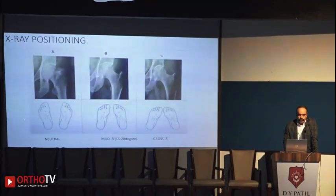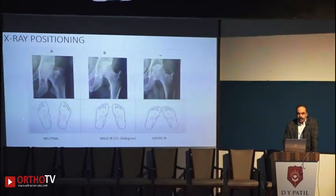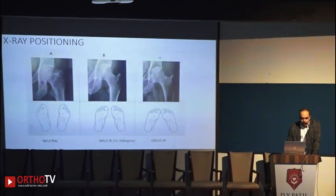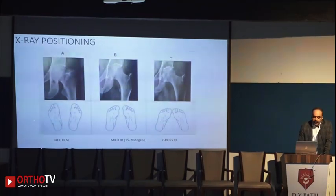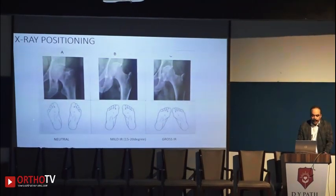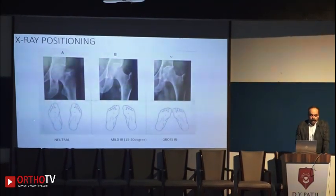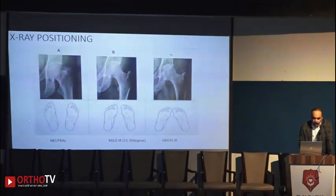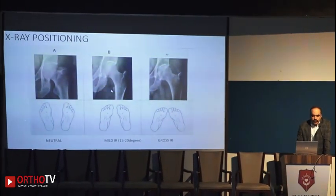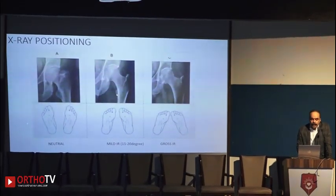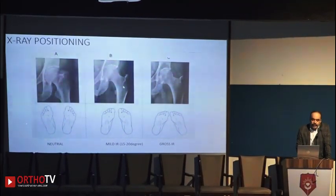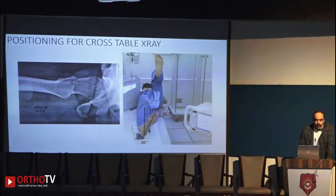mild internal rotation of 15 to 20 degrees, and gross internal rotation. The lesser trochanter keeps disappearing as you internally rotate. So the X-ray that you need is B, where the internal rotation is around 15 to 20 degrees. At least three millimeters of the lesser trochanter should be seen, the whole neck is visualized, and the greater trochanter is well delineated.